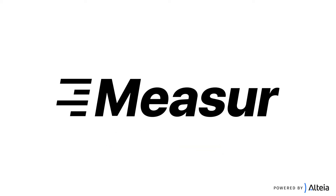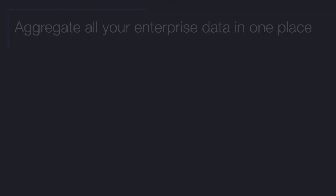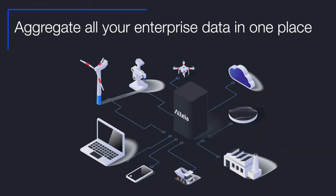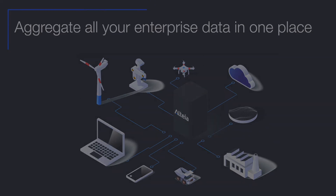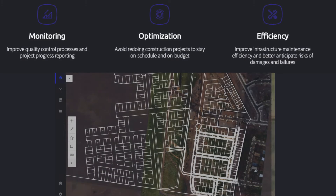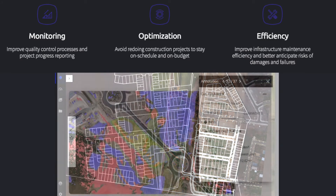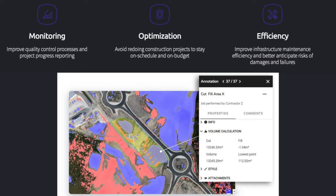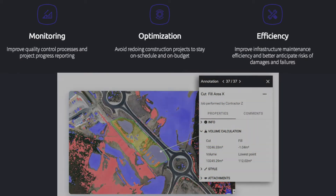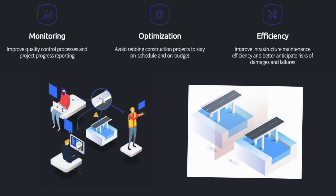Welcome to Altea, the platform for visual intelligence. One thing that makes us unique is our ability to aggregate and analyze a variety of different types of geospatial data within the platform. Today we'll be uploading and visualizing a road design file and comparing it against a DSM file generated from photogrammetry, to show how our customers are leveraging the platform to track and monitor dirt quantities during a road construction project.